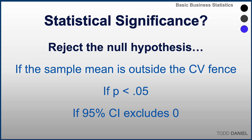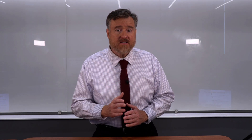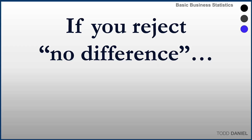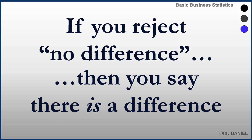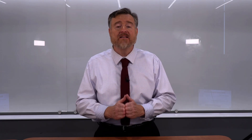The null hypothesis says there is no difference between the sample mean and the population mean. If you reject a hypothesis that says there is no difference, what are you saying? That there is a difference. Rejecting the hypothesis of no difference means that we accept the hypothesis that there is a difference, and that difference was specified in the alternative hypothesis.